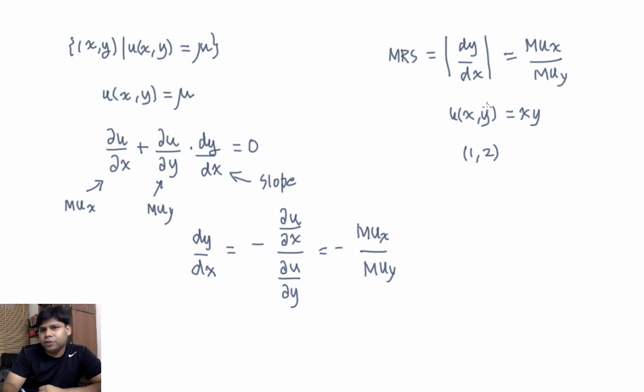So what we're going to do is we're just going to simply use this expression here. It should be MUx by MUy, so we know that MRS, in this case, is going to be y by x. And y is 2, x is 1, so we are going to get 2.